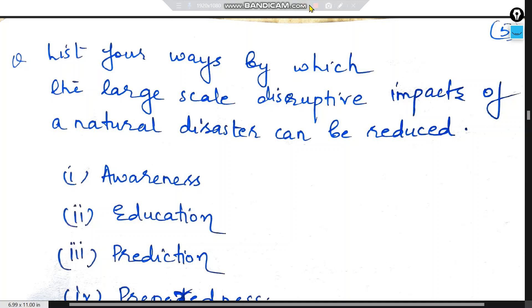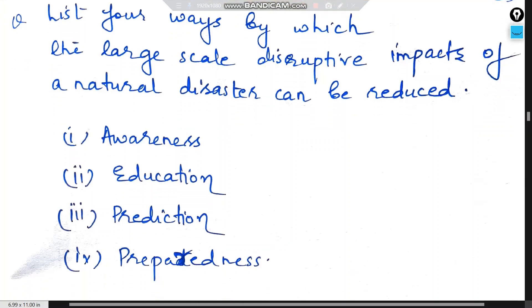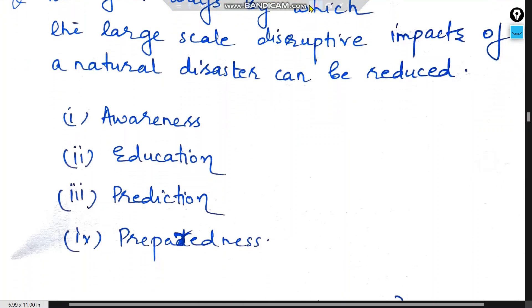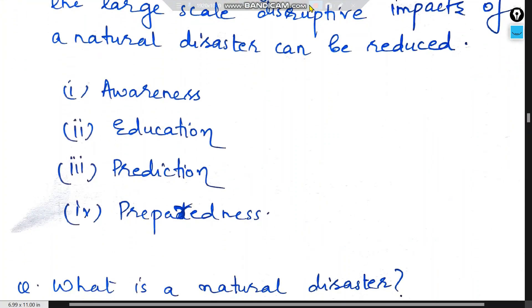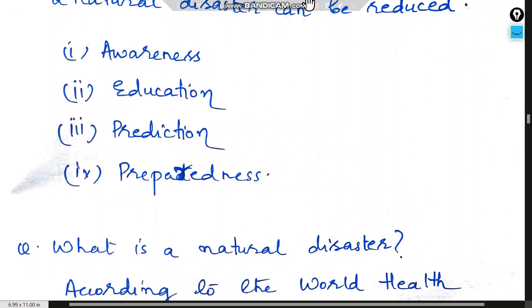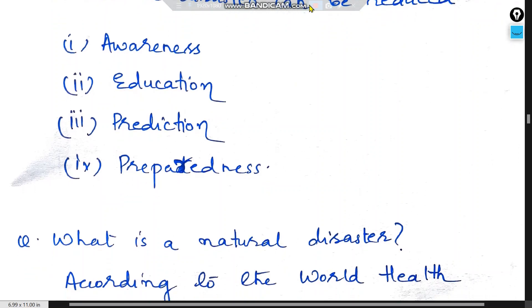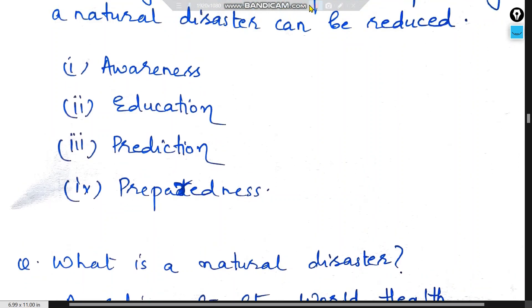Now, list four ways by which the large-scale disruptive impacts of a natural disaster can be reduced. The four factors are: Awareness, Education, Prediction, and Preparedness — A, E, P, P.